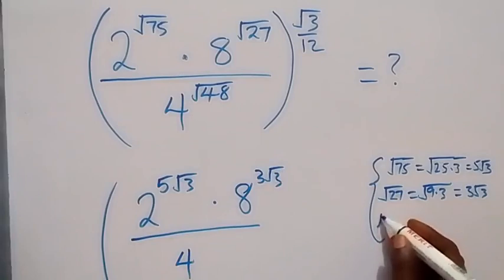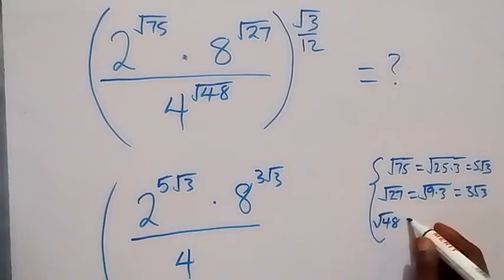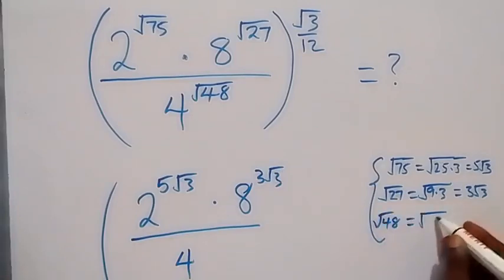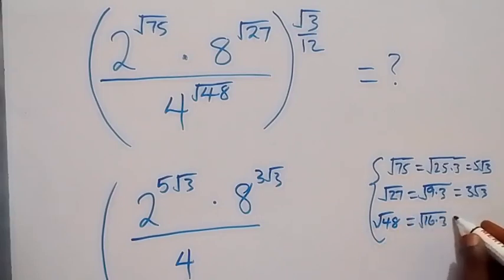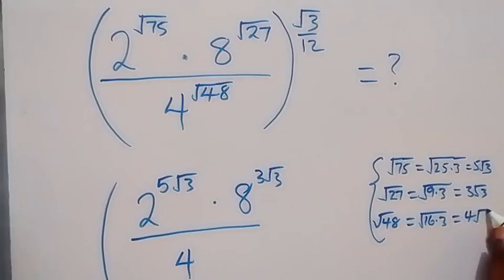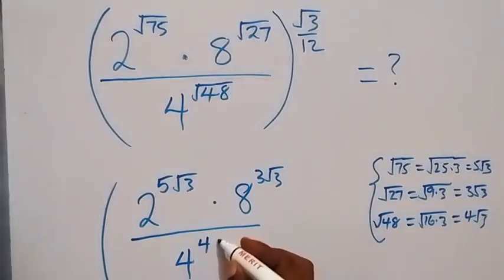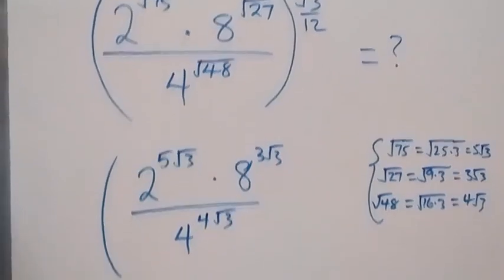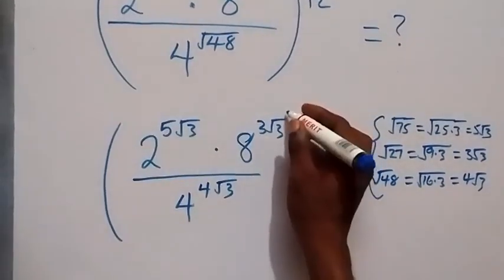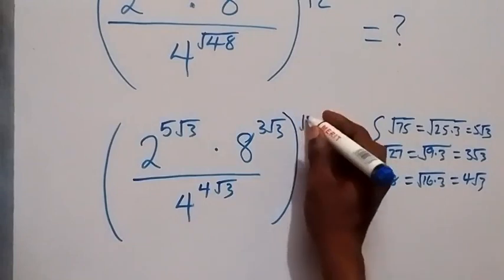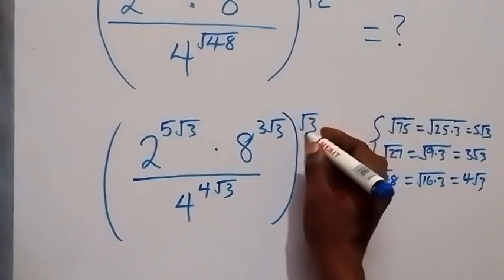Then divided by 4 raised to power root 48. We can write root 48 as root 16 times 3, and root 16 is 4, which gives 4 root 3. So we have 4 raised to power 4 root 3, which is all raised to power root 3 over 12.